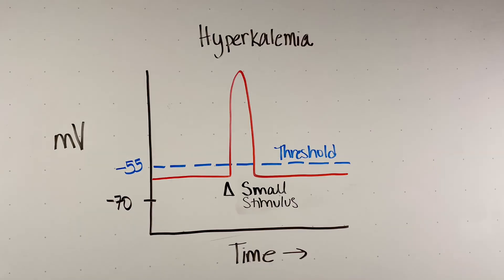Hyperkalemia depolarizes the resting membrane potential, moving it closer to threshold. This means that a smaller stimulus can now cause threshold to be reached and therefore trigger an action potential. The fact that a smaller stimulus can cause an action potential — and thus muscle contraction — manifests as muscle hyperactivity.